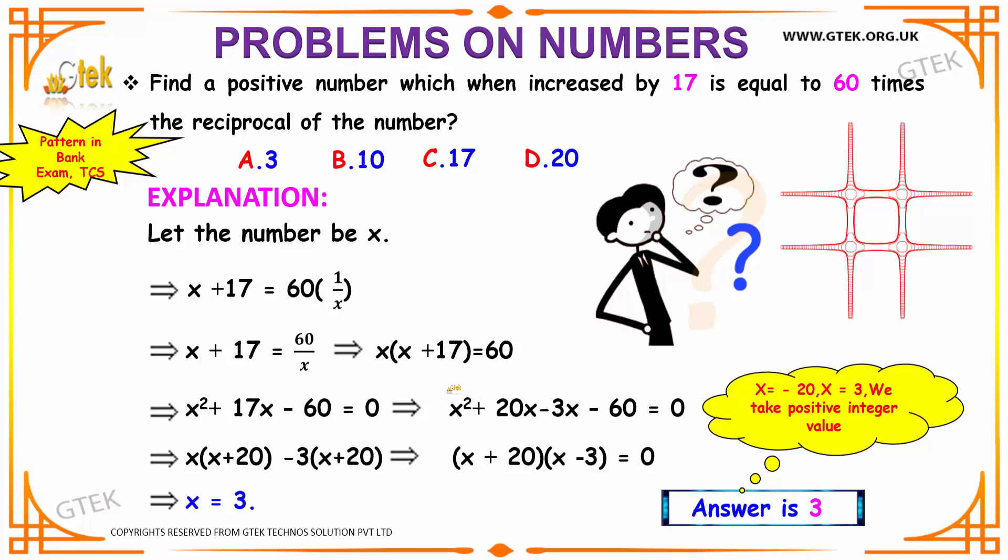As you can see, you have x to be common in this term, and you have a common factor of 3 in this term. Take it outside. So you have x(x + 20) - 3(x + 20).